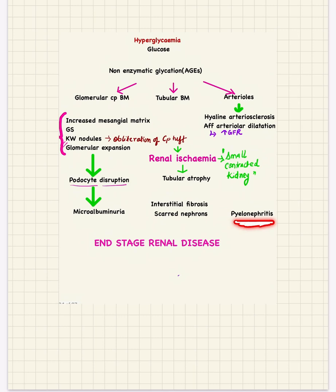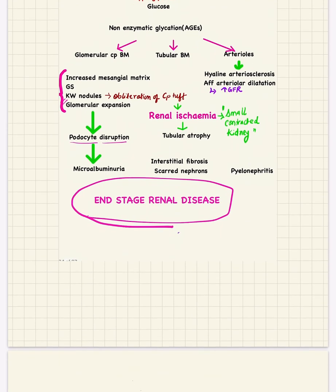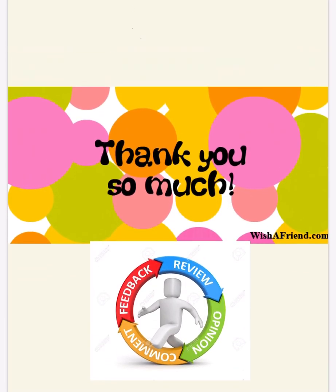There will also be pyelonephritis in the kidney. All these factors will cause end-stage renal disease in diabetic nephropathy. This was all about the pathogenesis and morphology of diabetic nephropathy. Any questions are most welcome in the comment section — thank you very much.